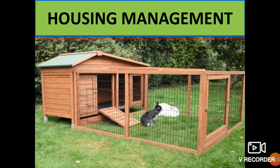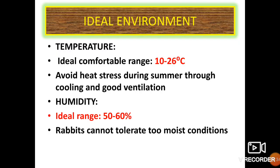Housing is an important factor that protects the animal from climate extremes and influences reproduction and growth of rabbits. The ideal environment depends on the following factors. First is temperature: the ideal comfortable range is 10 to 26 degrees Celsius; rabbits can tolerate a wide range of 3 to 33 degrees Celsius, but it is important to avoid heat stress during summer through cooling and good ventilation. Second is humidity: rabbits cannot tolerate very moist conditions, so maintain the ideal humidity range between 50 to 60 percent.